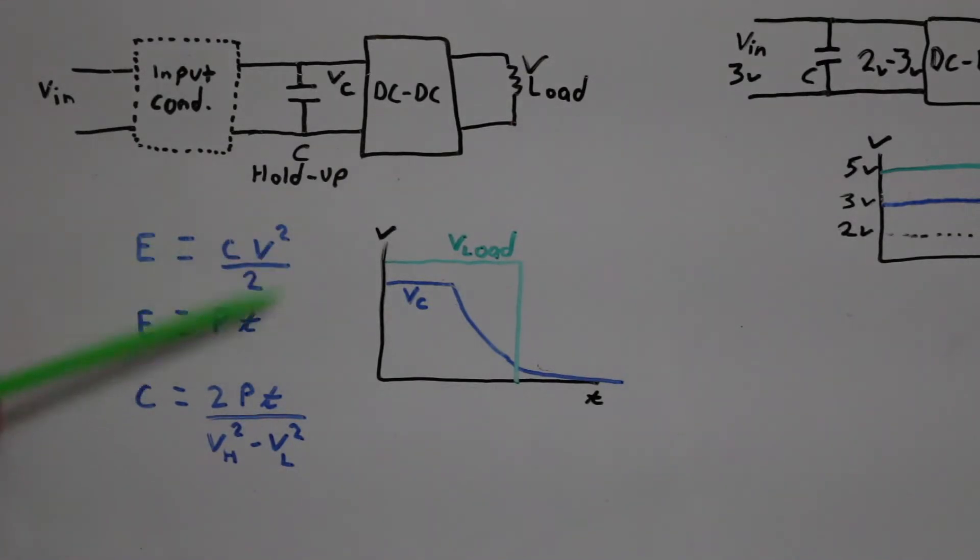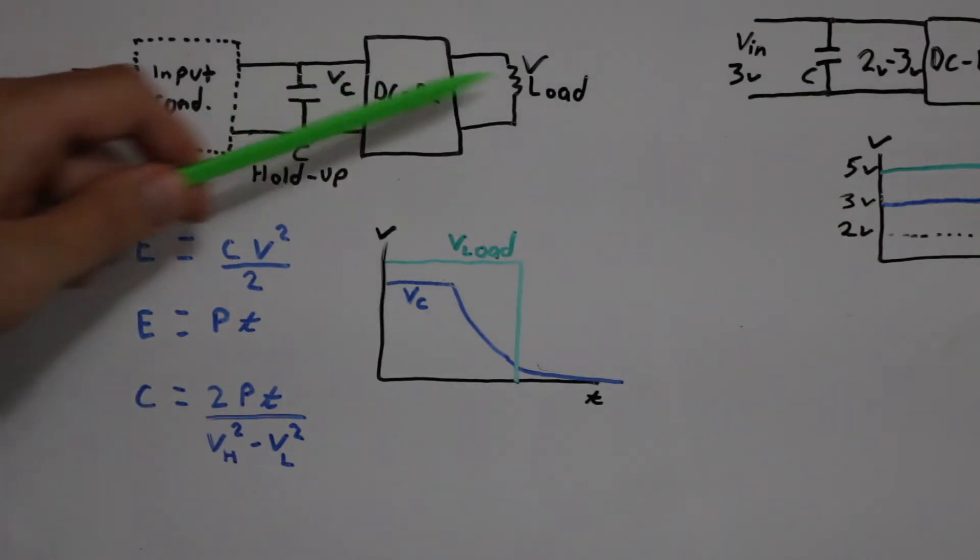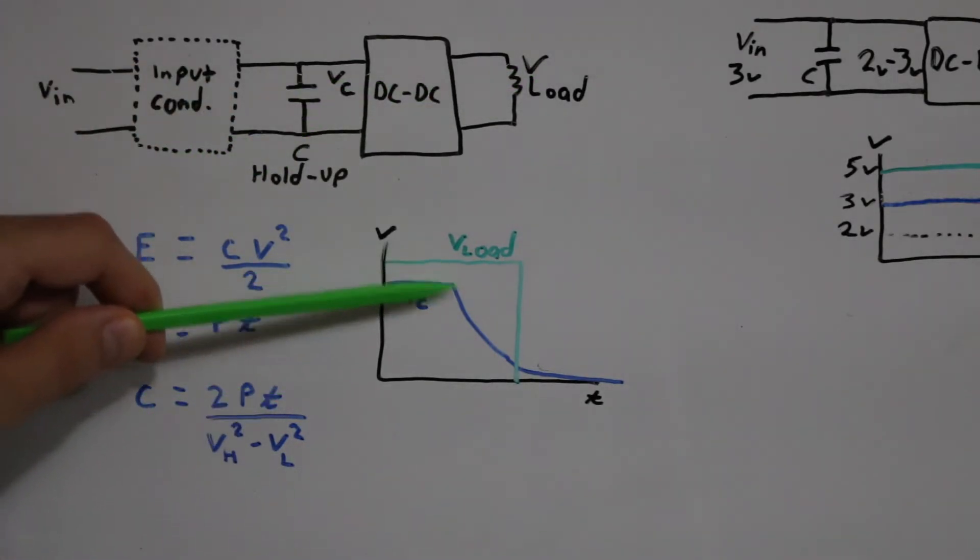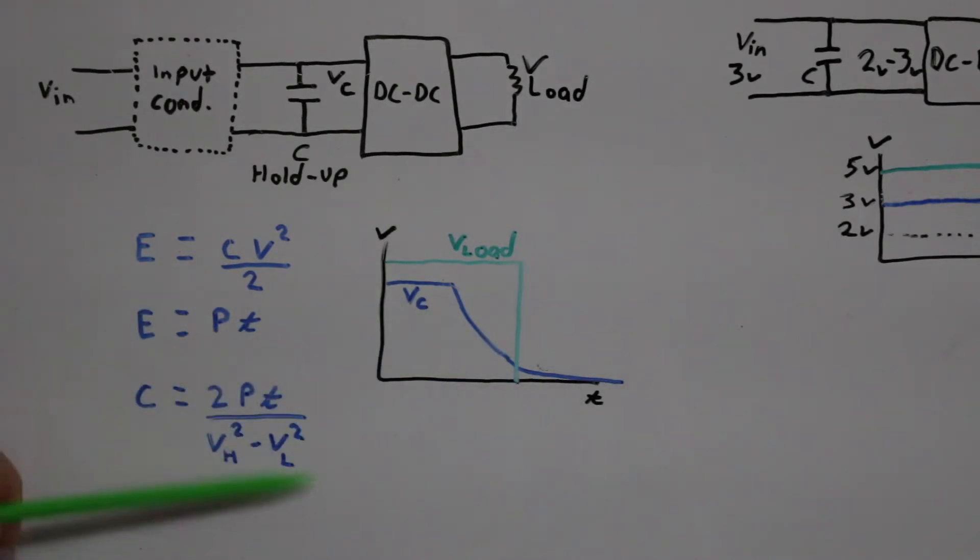So from these equations, we end up with a formula where we can calculate either the amount of capacitance to power a certain load for a certain time between a starting and a final voltage level.